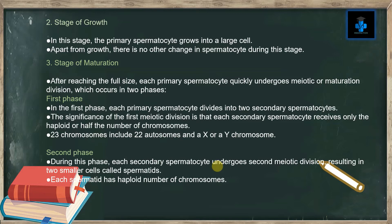The 23 chromosomes include 22 autosomes and either an X or Y chromosome. In the second phase, each secondary spermatocyte undergoes a second meiotic division resulting in two smaller cells called spermatids. Each spermatid has the haploid number of chromosomes.